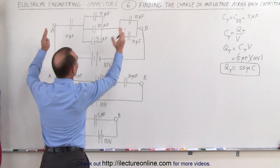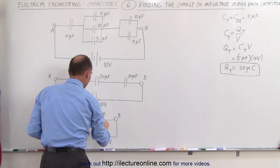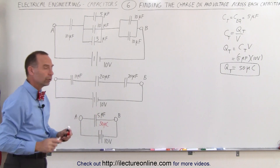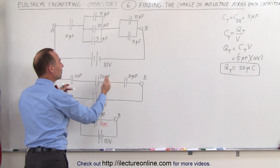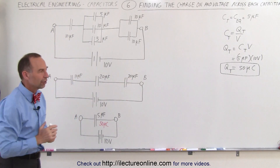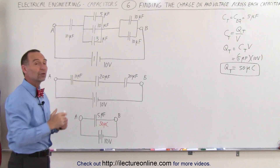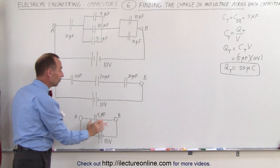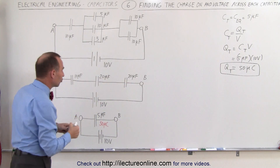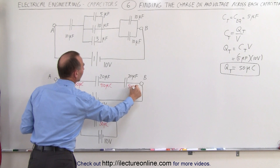So if we replace the entire circuit with a single equivalent capacitor, its total charge would be 50 microcoulombs with 10 volts across it. Now, working backwards to the intermediate result with three capacitors in series — when capacitors are in series, the charge on each is equal to the total charge. So each of these three capacitors carries 50 microcoulombs.